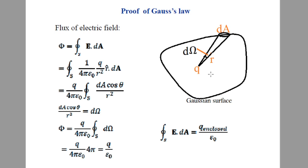Where Q is the charge enclosed within the closed surface. This result is independent of the position of the charge — it is valid as long as the charge is inside the surface. If we have multiple charges Q₁ and Q₂ inside, then Q₁ gives flux Q₁/ε₀ and Q₂ gives flux Q₂/ε₀. So the total flux will be (Q₁ + Q₂)/ε₀, which equals 1/ε₀ times the total charge enclosed by the surface.